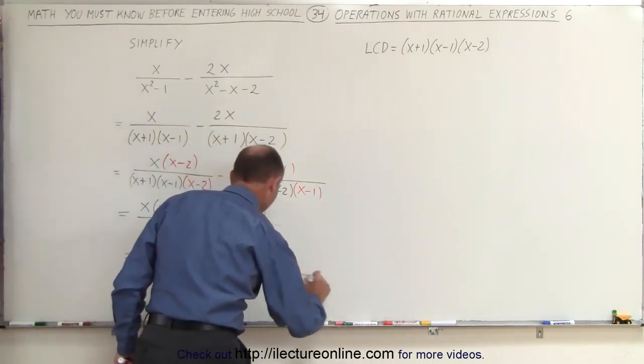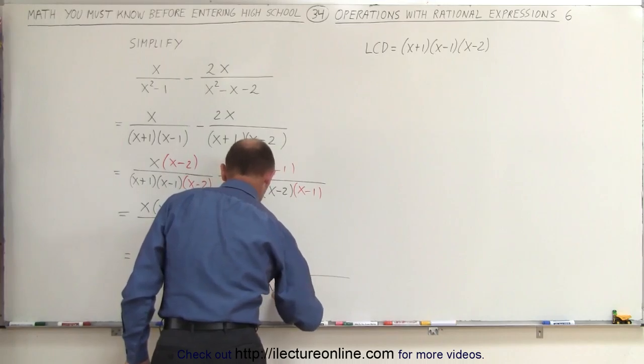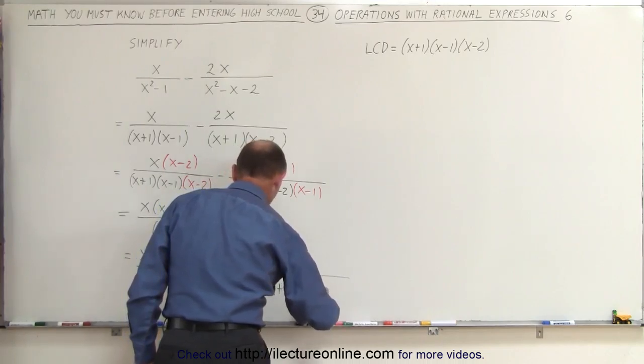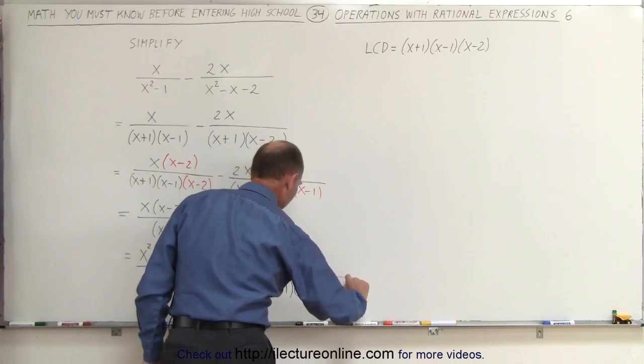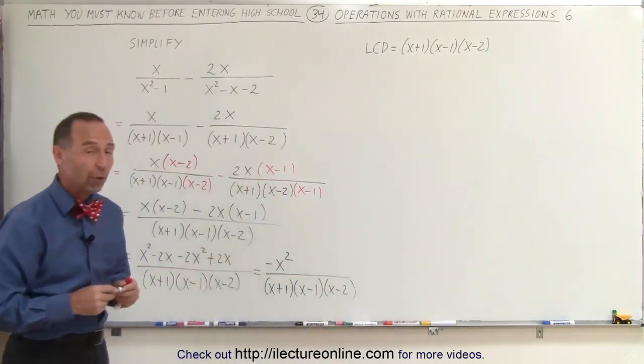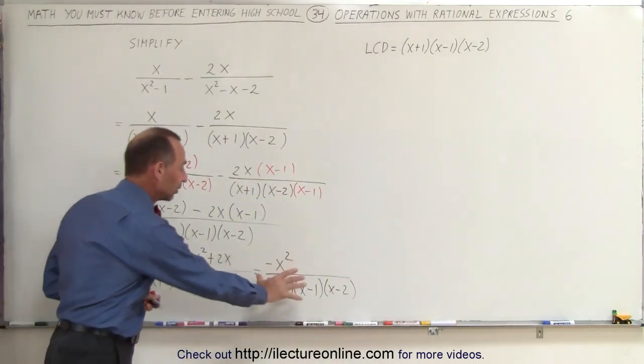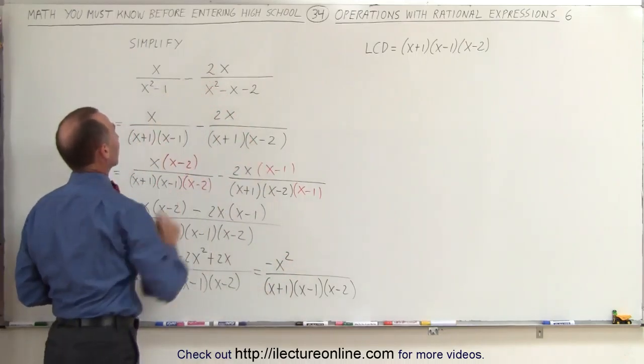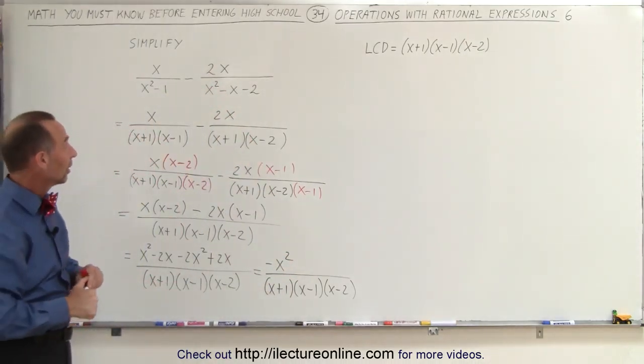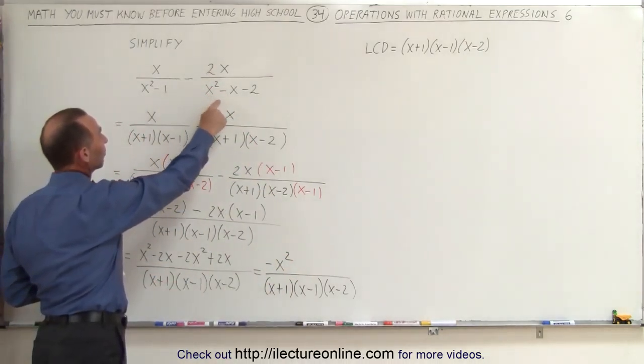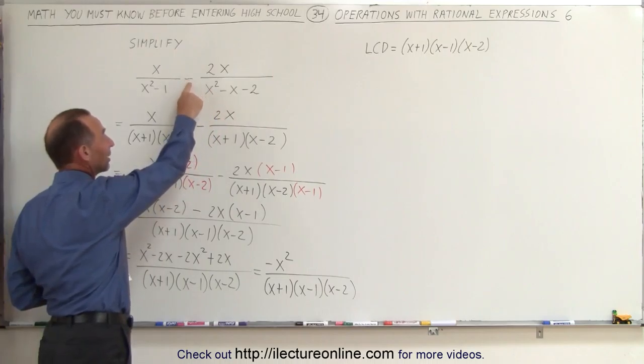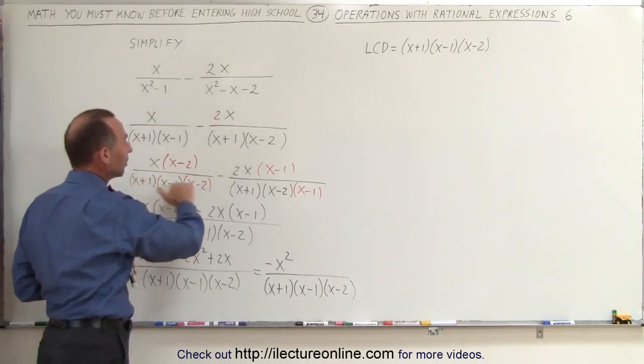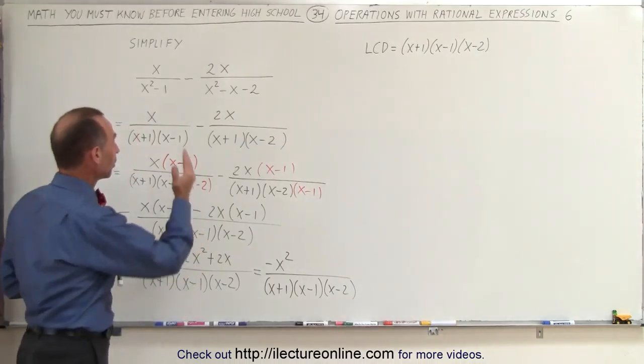And now we're going to combine like terms in the numerator. I have a plus x squared, a minus 2x squared, that's minus x squared. I have a minus 2x and a plus 2x. Well, that cancels out, so I'm left with this, divided by the quantity x plus 1, x minus 1, and x minus 2. And that's the simplest form we can write it. So that would be the final simplest form of our initial expression.